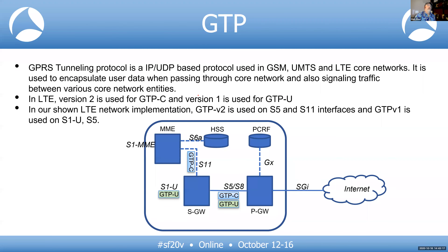For LTE, GTP version 2 (GTP-C) was introduced for the control plane, while version 1 — as in GSM and UMTS — is still used for the user plane. GTP-C goes from the MME to the S-Gateway to help set up the bearer, and also between the S-Gateway and P-Gateway to set up the user plane. Once that's done, the eNB uses GTP-U (version 1) to communicate to the S-Gateway. The S-Gateway acts as a translator, passing GTP-U to the P-Gateway, which then sends it out to the internet.